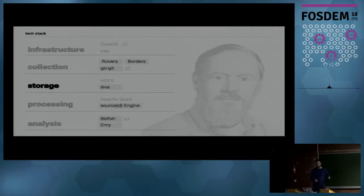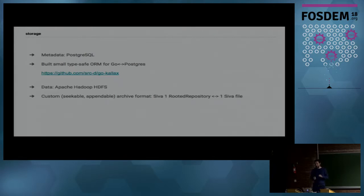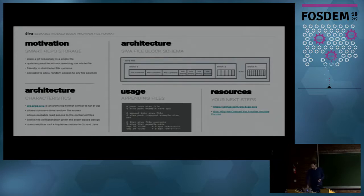Once you've collected URLs and Git repositories, you need to store them somewhere distributed. For the URL side it's just a Postgres database — we wrote a custom ORM in Go called Kallax, which is type-safe and quite nice. For the repository side it's HDFS, which works very well but scales linearly with the number of files, so we want to minimize file count. We do this with a custom archive format called SIVA. It's a seekable, appendable, and indexed format, so you can fetch a repository once and then append to it after new clones or fetches happen. Everything is stored in HDFS.